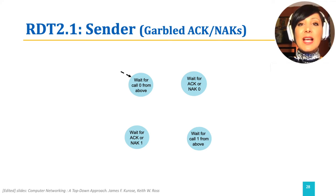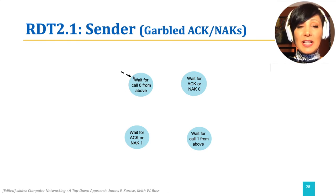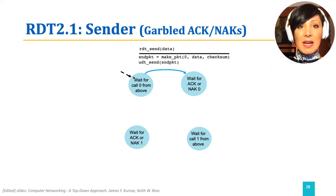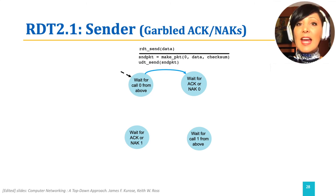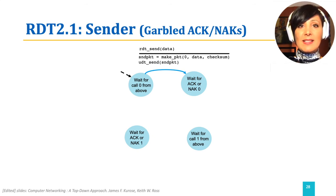The sender FSM starts at the state of waiting for packet zero. On the arrival of data from the layer above, with a call of RDTSend, the packet is made with sequence number zero and sent using UDTSend. The sender then enters the state of waiting for acknowledgement for packet zero.